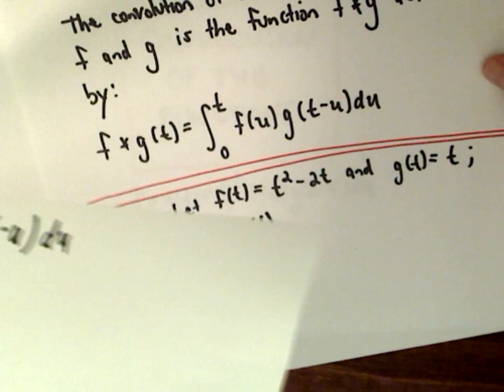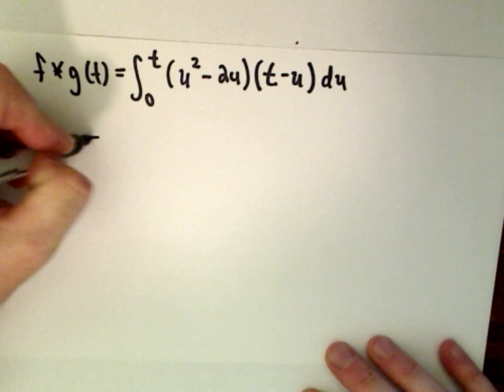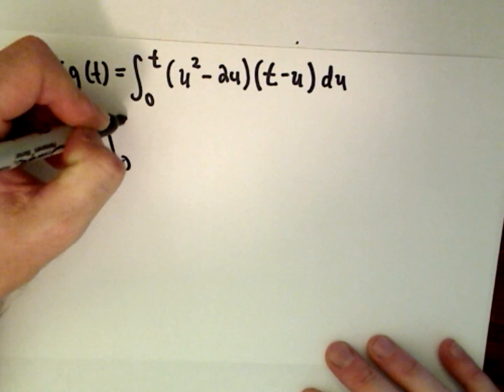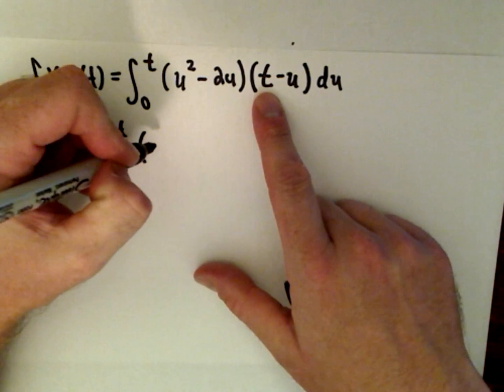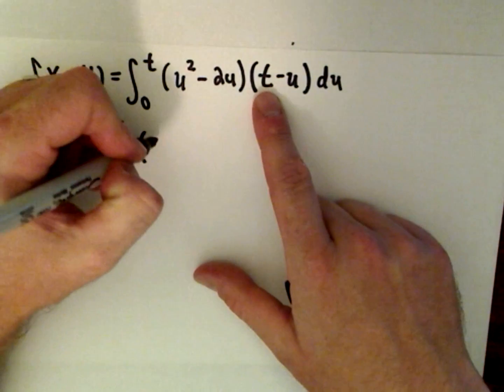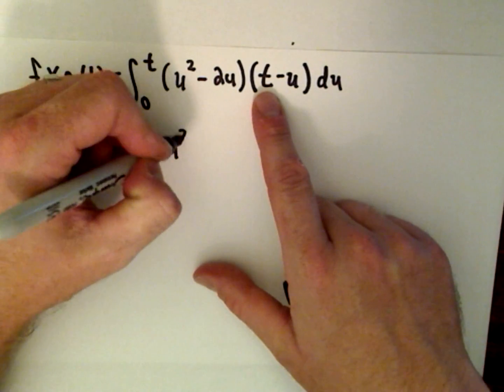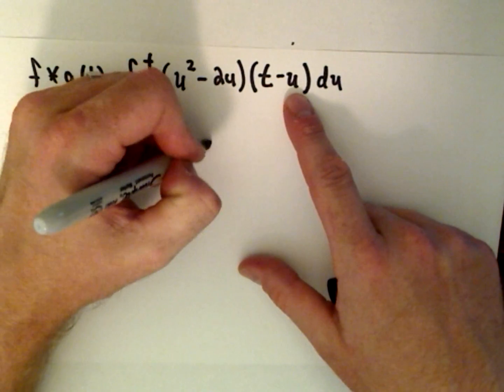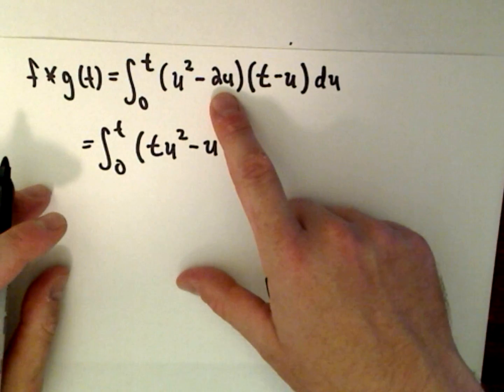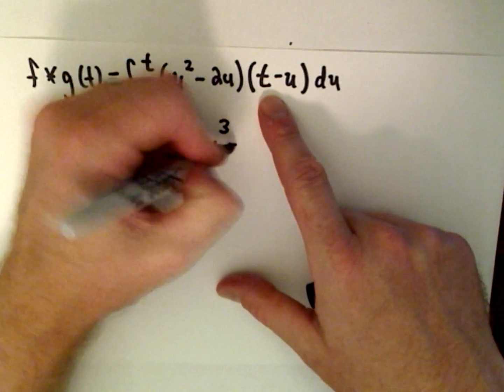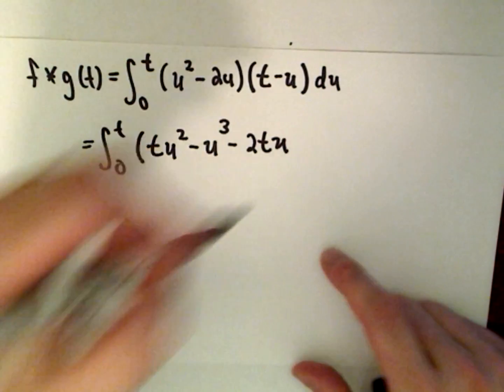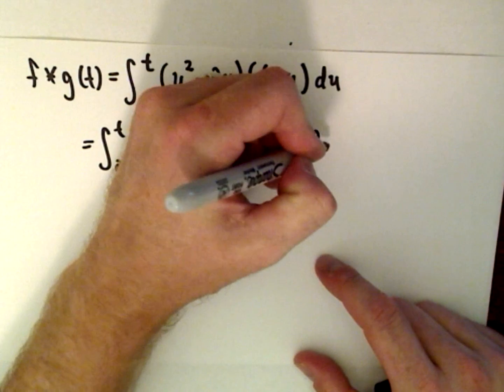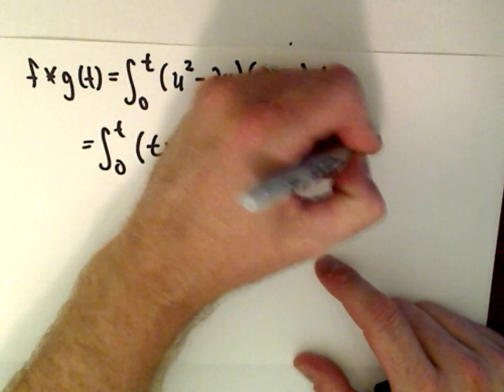Let's multiply this out real fast. We've got the function from 0 to t; if we distribute we'll have u squared times t, so I'm going to write that as t multiplied by u squared. We've got u squared minus u, so it'll be minus u to the third. We've got negative 2u times t, so I'm going to write that as negative 2t times u. And then negative 2u times negative u, that's going to be positive 2u squared. And again, we're integrating all of this with respect to u, so be careful about your t's and your u's.